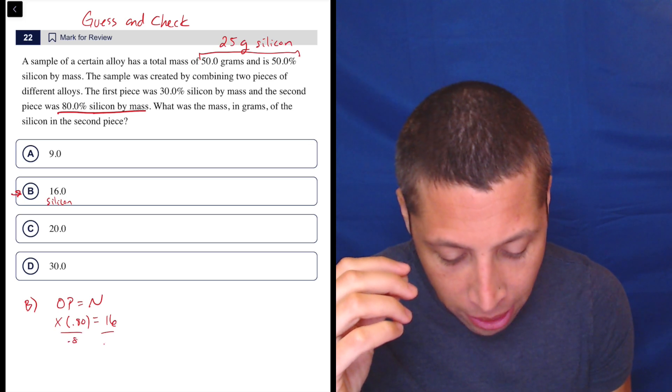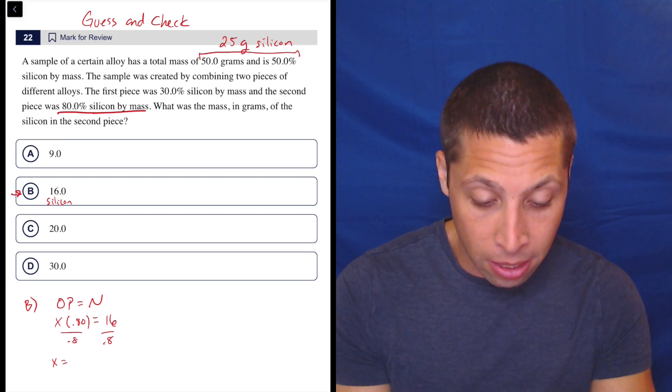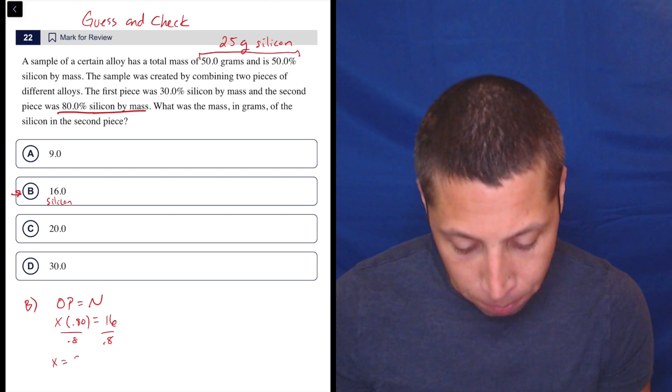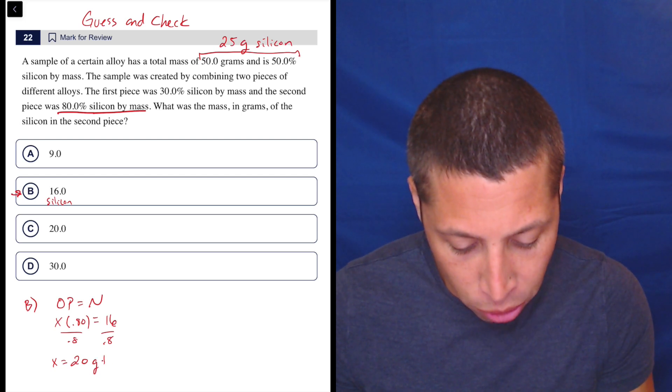So let's find the total mass of it. That would mean dividing by 0.8. This is a job for this calculator. And so 16 divided by 0.8 is 20. So that's 16 grams of silicon and 20 grams total.